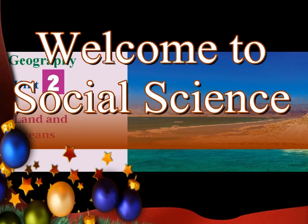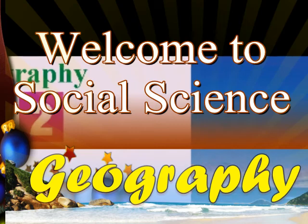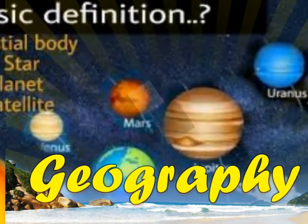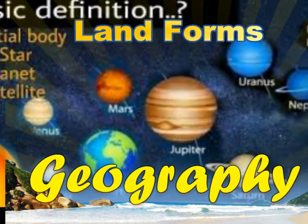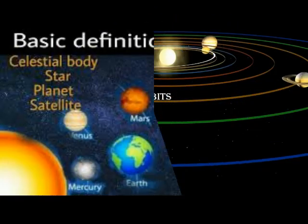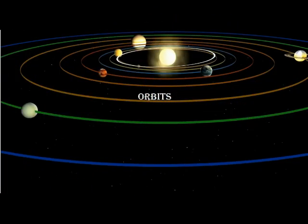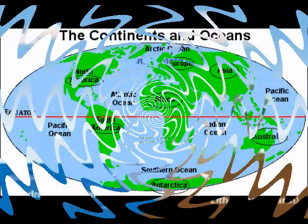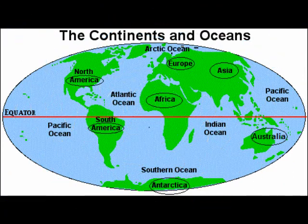Welcome dear children, this is your social science class. In the previous geography lesson, we have learned about celestial bodies, planets and spheres of the earth. Now we are going to learn about 7 continents and 5 oceans.